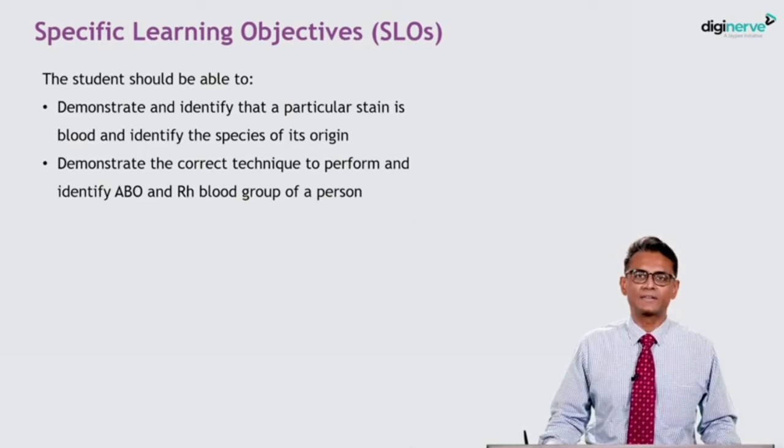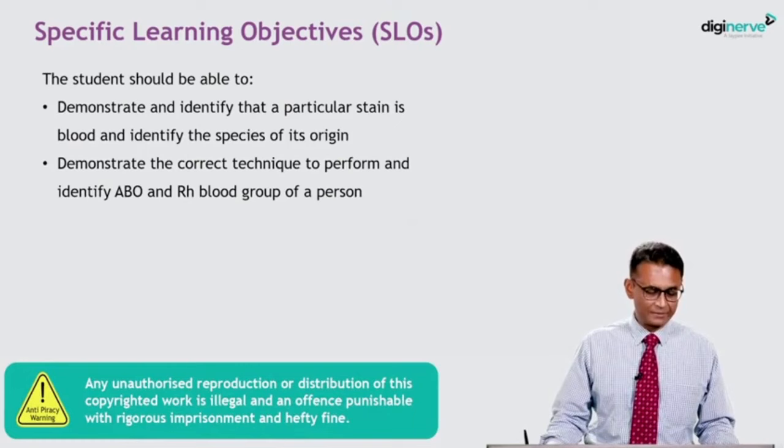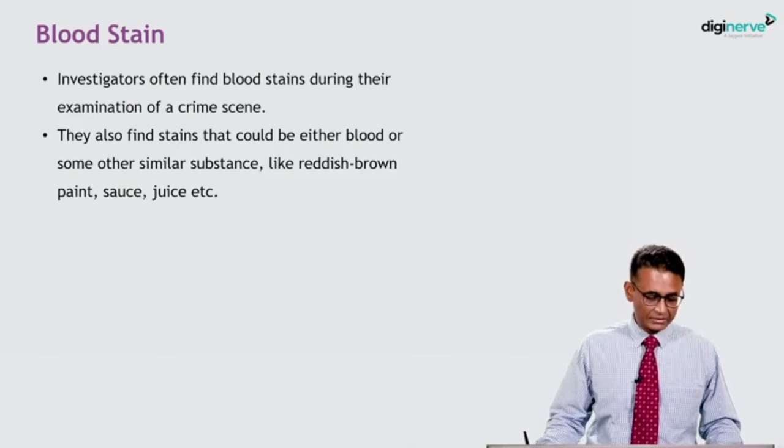Hey guys, welcome to another session on FMT. Today we will discuss examination of blood stains. It is part of the skills, but some MCQs do ask from this topic. At the end of this session, you should be able to demonstrate and identify that a particular stain is blood and identify the species of its origin, and demonstrate the correct technique to perform and identify ABO and RH blood group of a person.